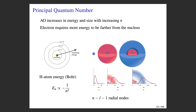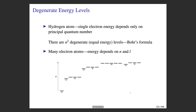So the principal quantum number is associated with both the energy of the electron in an atomic orbital and the size or spatial extent of the atomic orbital.